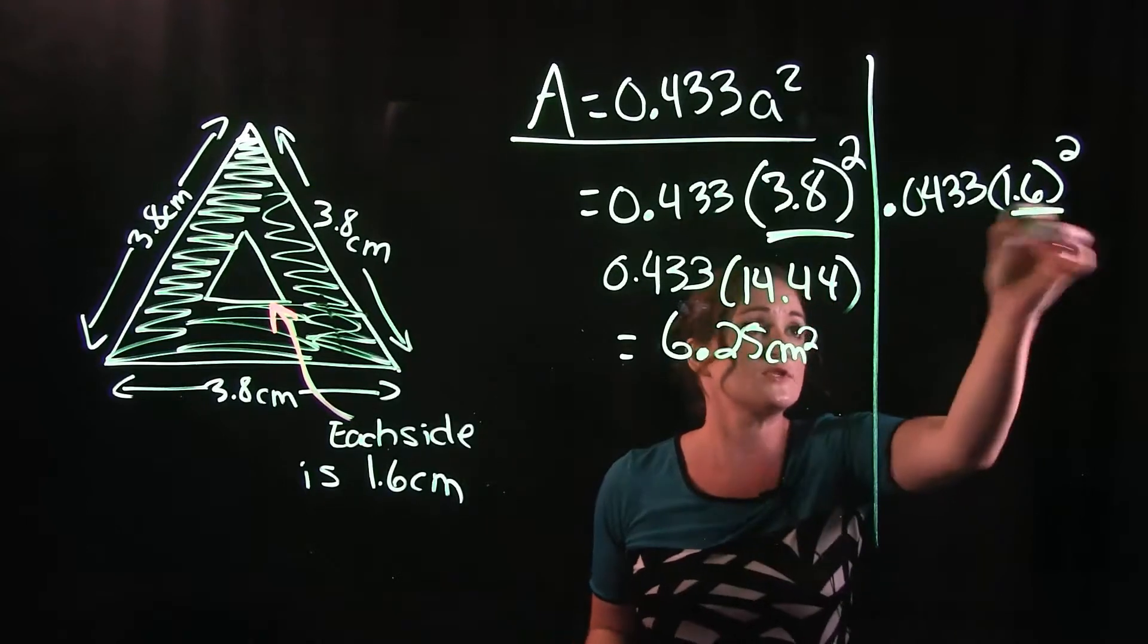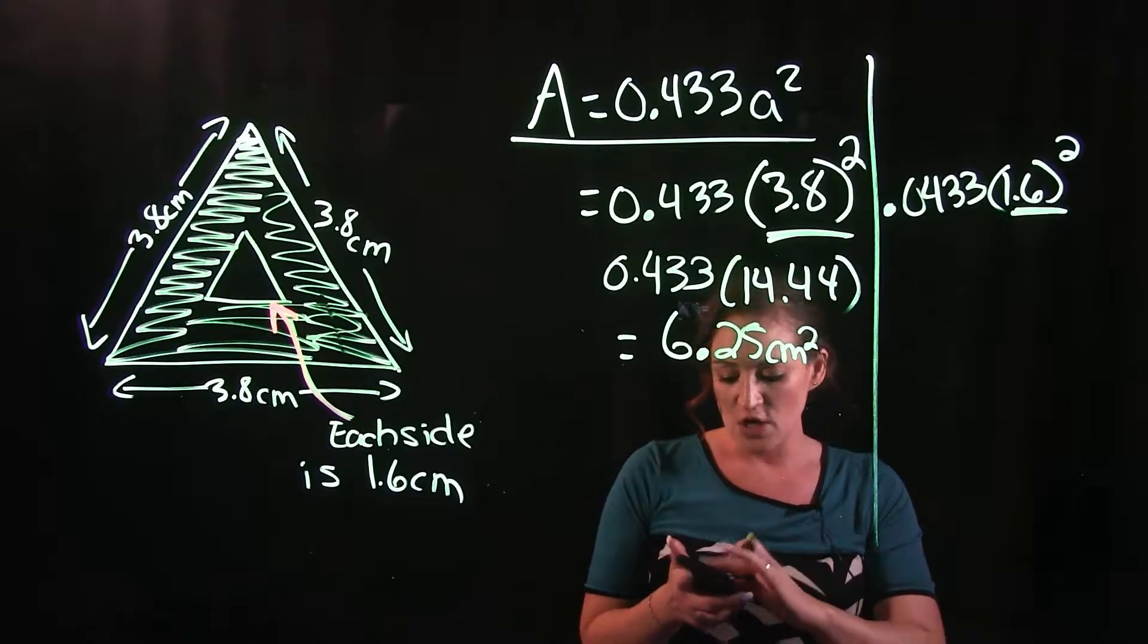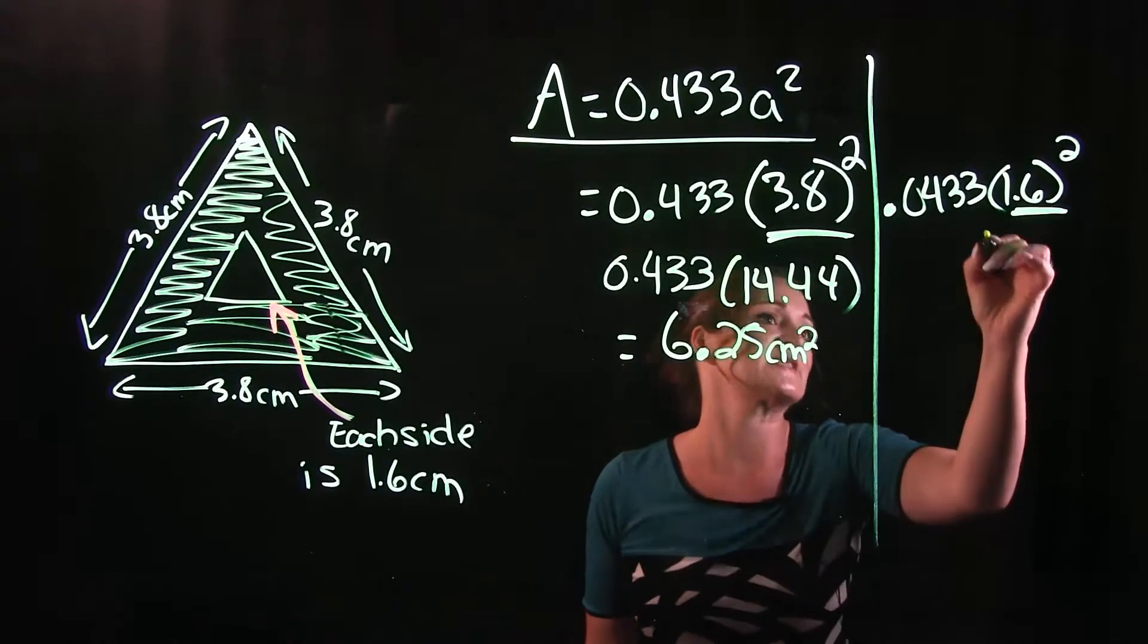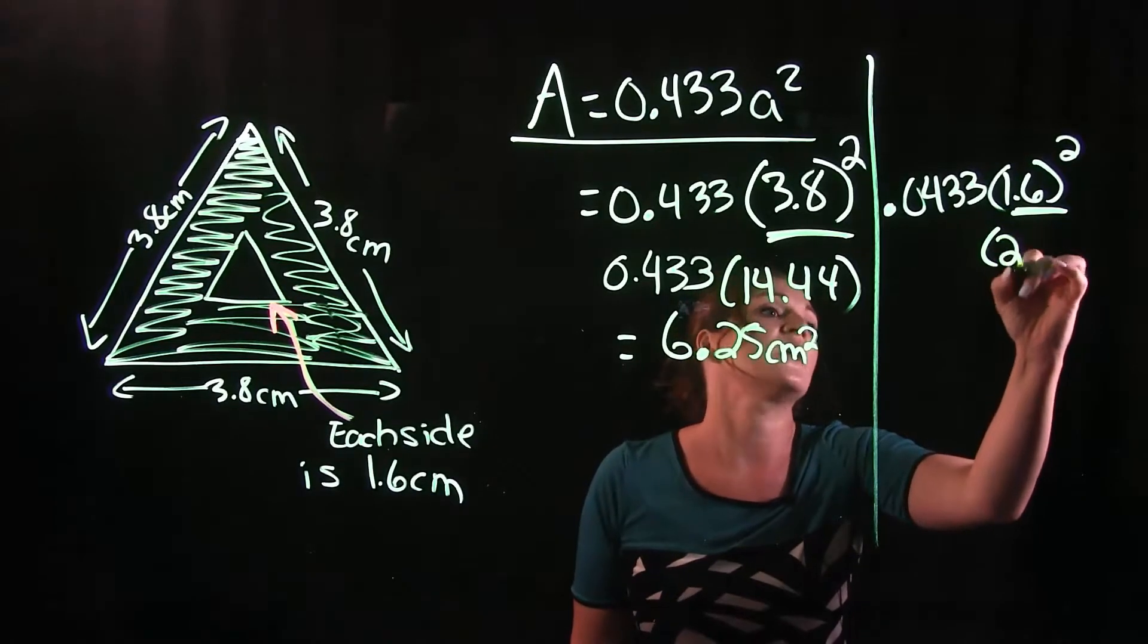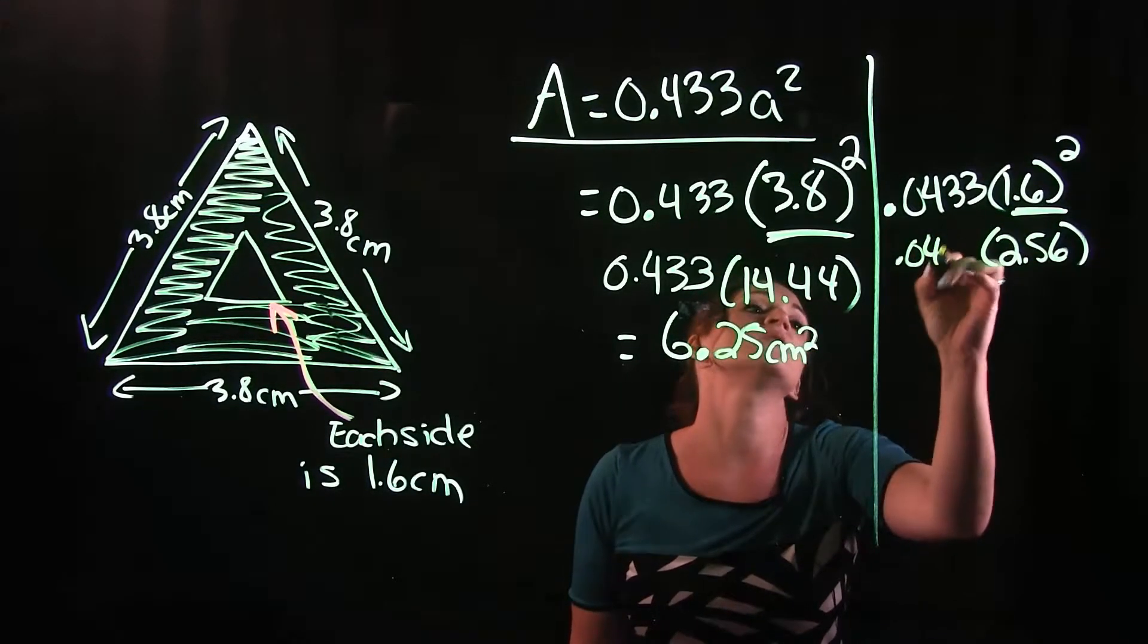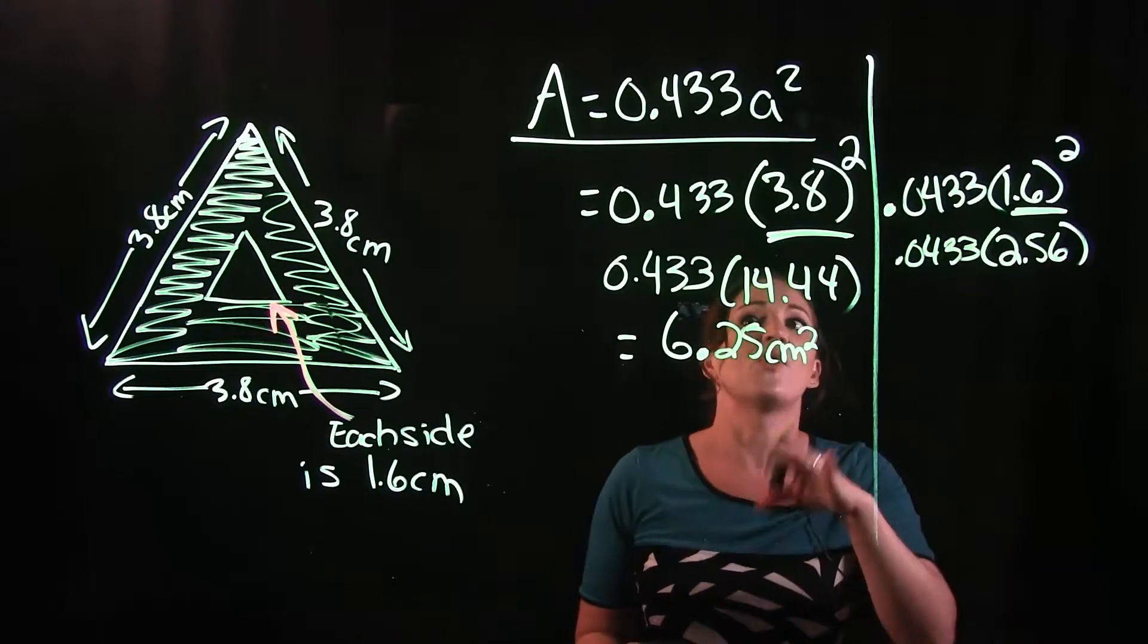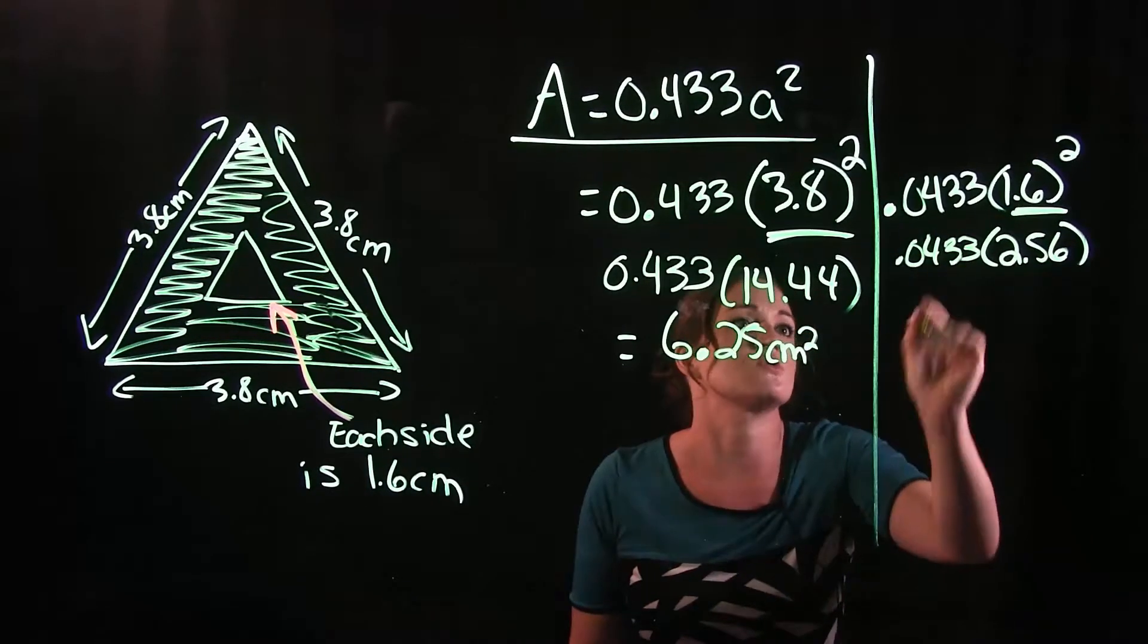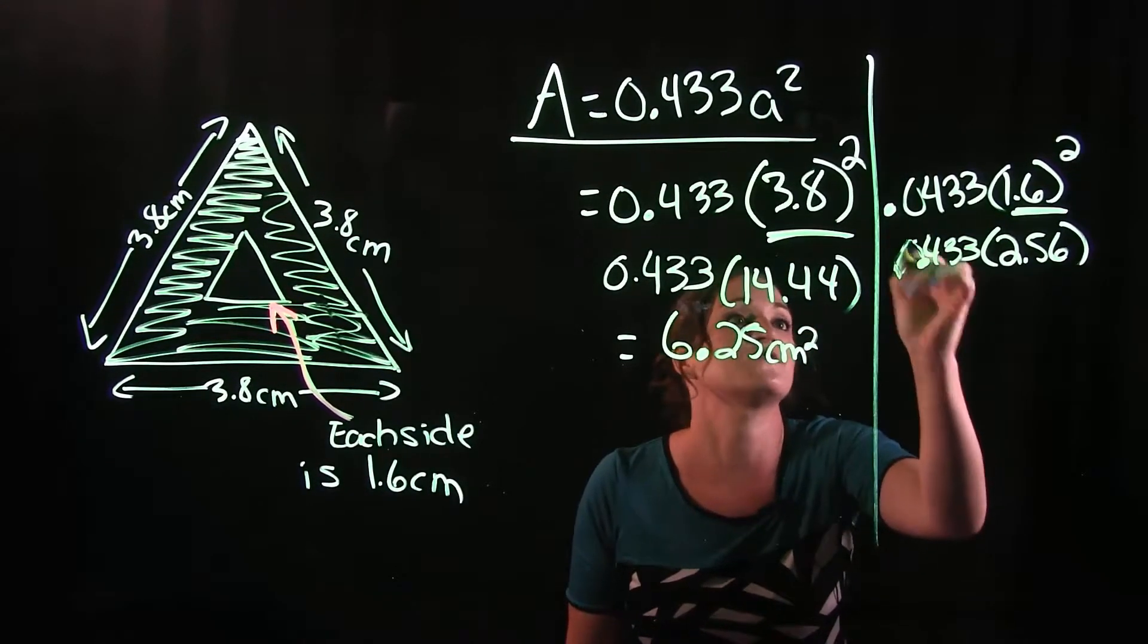Same thing here. Order of operations tells us to simplify our exponent first. If we do 1.6 times 1.6, we get 2.56. And we need to multiply that by 0.433.